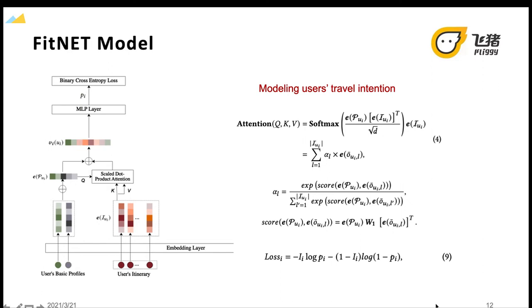To better understand user's travel intentions on the premise of knowing their basic profiles. For example, if a user's home city is Hangzhou while the user's destination city in an unconsumed order of his or her itinerary is also Hangzhou, then FitNet can infer the user's travel intention as visiting relatives and thus do not recommend local vacation items in Hangzhou to the user. The scaled dot product attention is applied to the embedding vectors of user's basic profiles and user's itineraries. The calculation is shown in equation 4 and the binary cross entropy loss function is shown in equation 9.